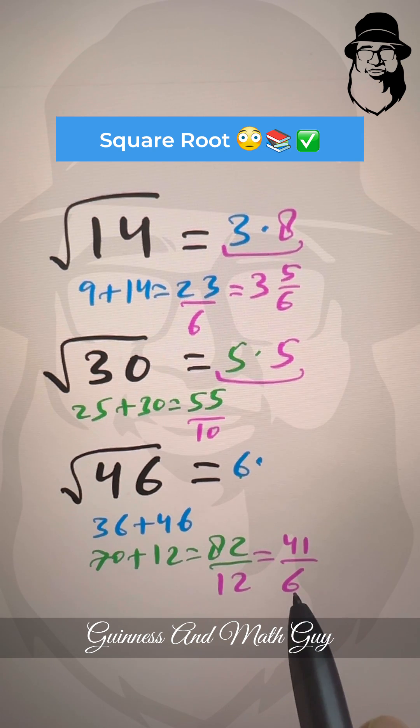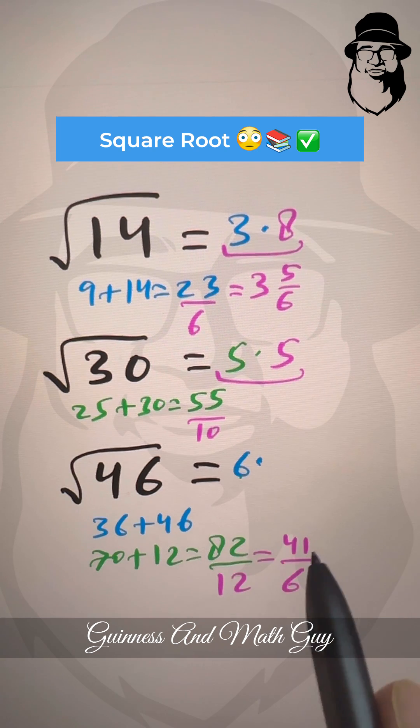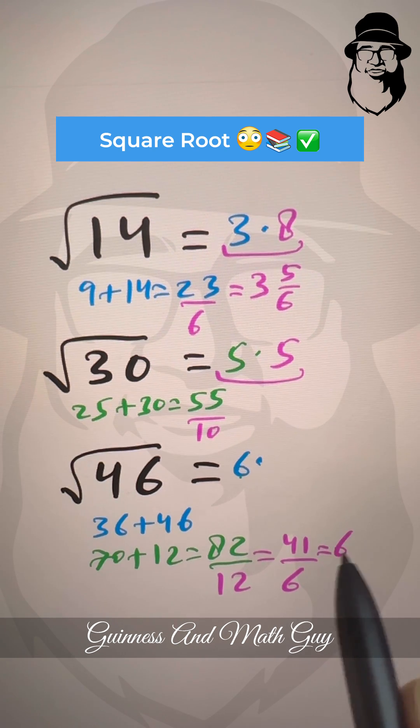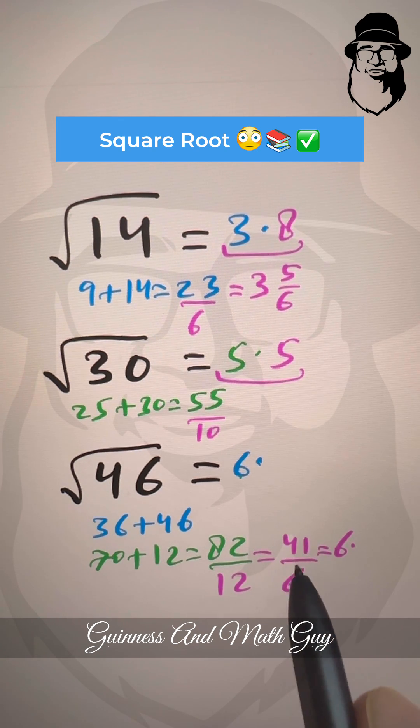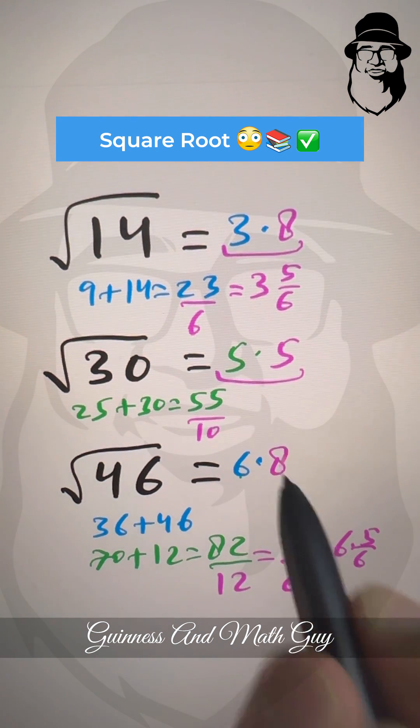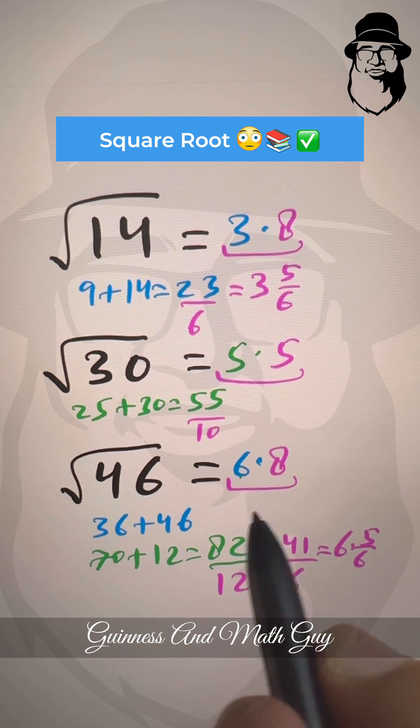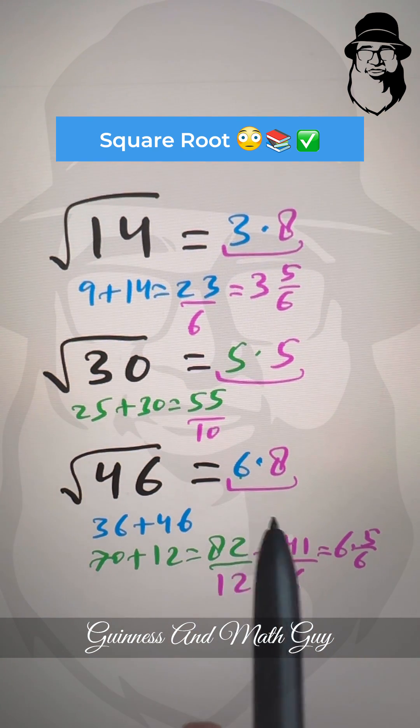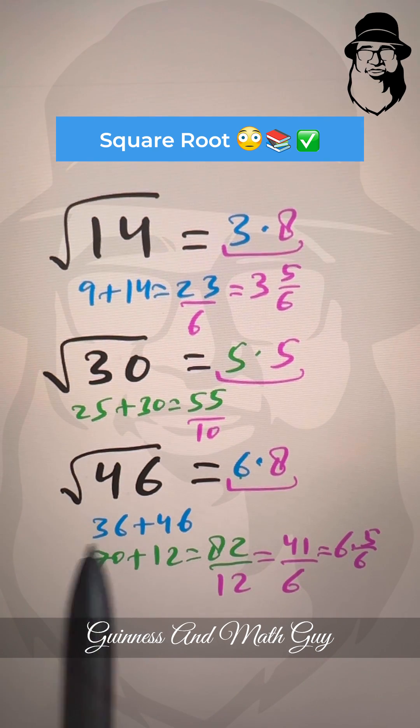And 41 over 6 is, 6 times 6 is 36. So it's 6 point, we have 5 remainder. 41 minus 36 is 5. So 5 over 6, right? 5 over 6, again, 0.83 or we'll write 8. That is the approximation to one decimal place for square root of 46.